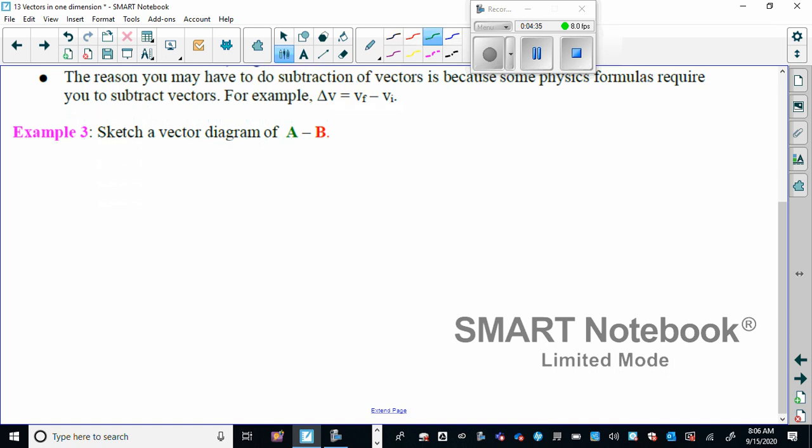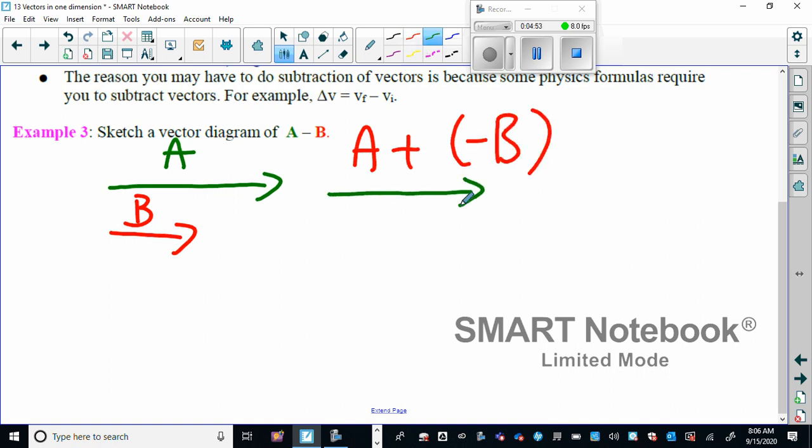Here's A, and there's B. But we want to change it to A plus negative B, which means A stays the same but now negative B becomes that one there. And so now when we place these tip to tail and then the resultant tail to tail, tip to tip, it ends up looking like this.